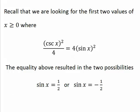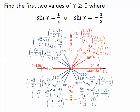The third factor is prime and would only give us solutions if we extended the discussion. Recall, we are looking for the first two values where we have equality. The equality above resulted in two real possibilities: sine x equals 1 half or sine x equals negative 1 half. So we're finding the first two values where sine is 1 half or sine is equal to negative 1 half.